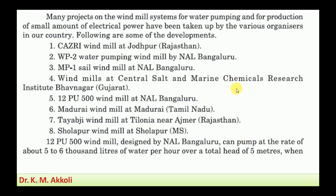In India, many projects on windmill systems for water pumping and production of small amounts of electrical power have been undertaken. Some developments include: the Kajri Windmill at Jodhpur, Rajasthan; the WP2 Water Pumping Windmill at NAL Bengaluru (National Aeronautics Limited); the MP1 Shell Windmill at NAL Bengaluru; Windmills at Central Salt and Marine Chemical Research Institute, Bhavnagar, Gujarat; and the Tolpu 500 Windmill at NAL Bengaluru.